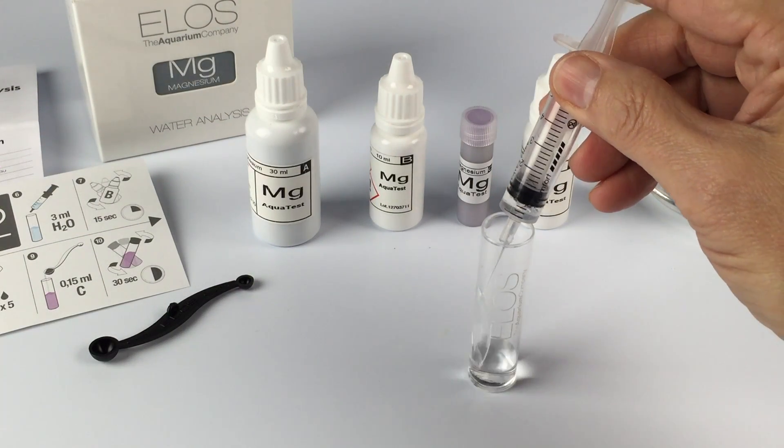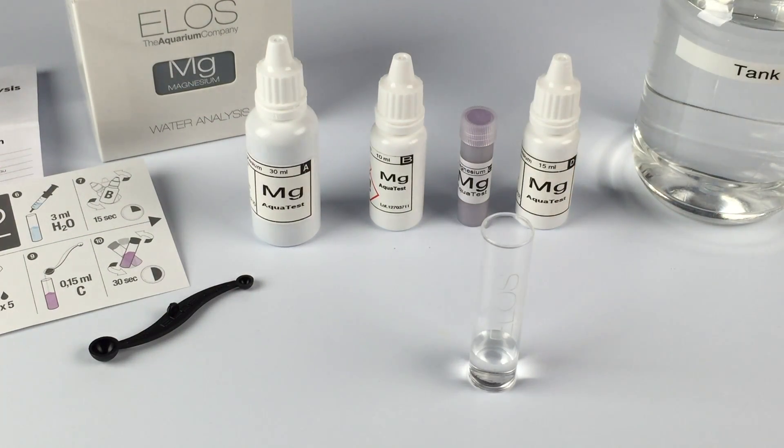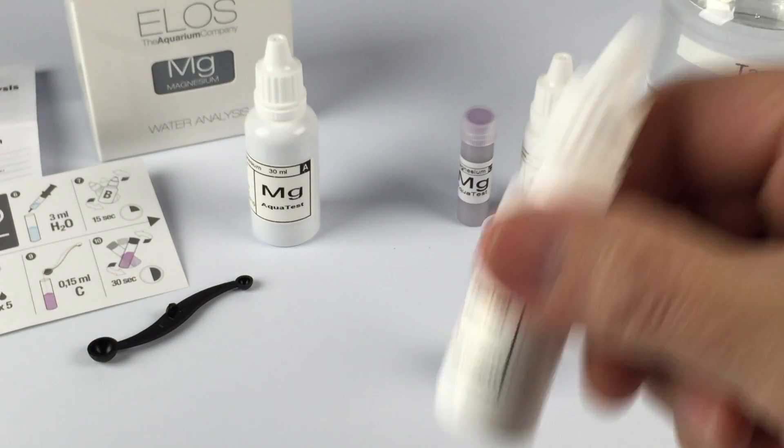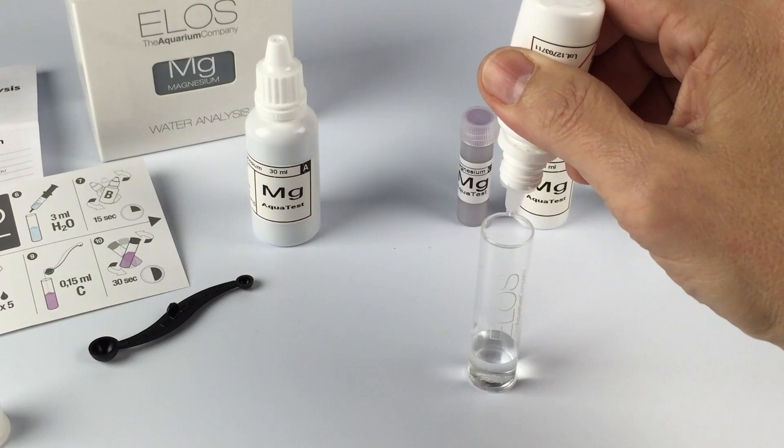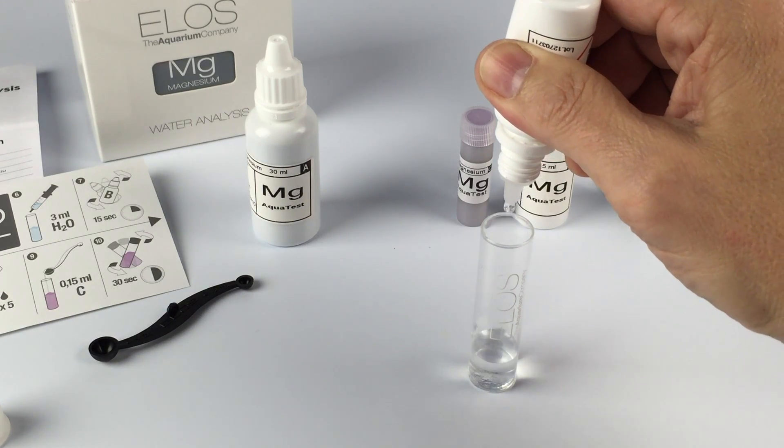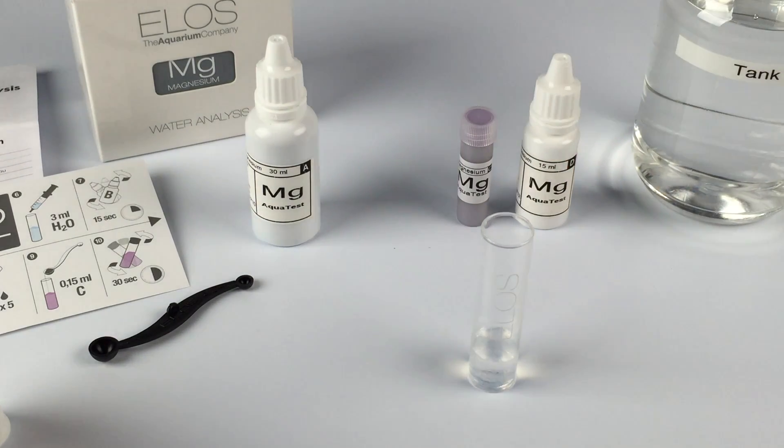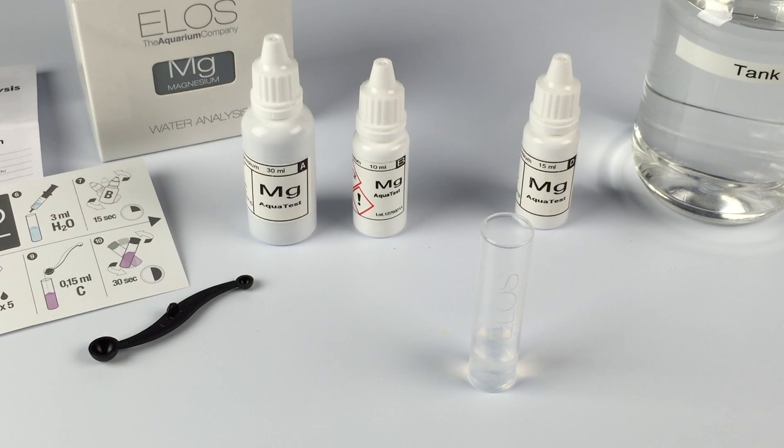Now that the vial has been cleaned out, add 3 milliliters of tank water again. Shake Part B for 15 seconds and add five drops to the vial. You don't need to mix it yet because we're going to add a scoop of Part C, the powder.